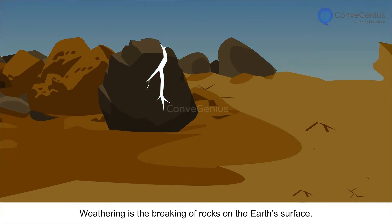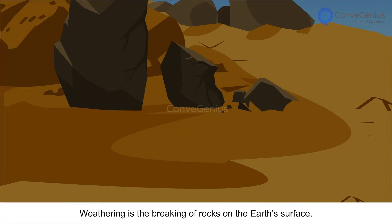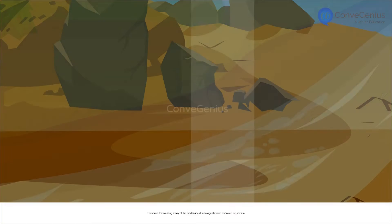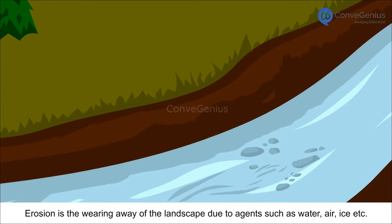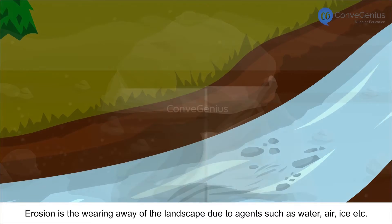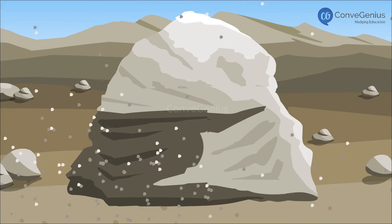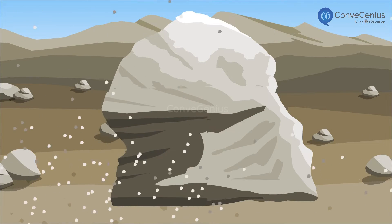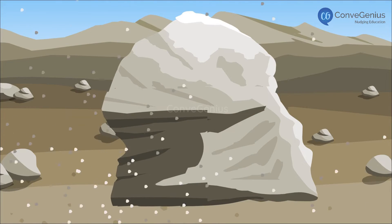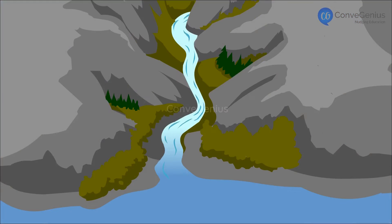Weathering is the breaking of rocks on the earth's surface. Erosion is the wearing away of the landscape due to agents such as water, air, ice, etc. In both cases, water or wind carry away the broken or eroded particles and deposit them elsewhere, thus changing the landscape.